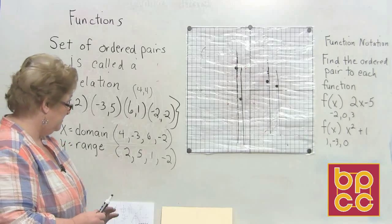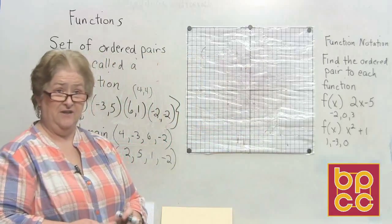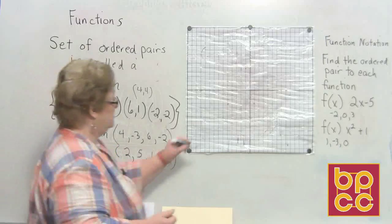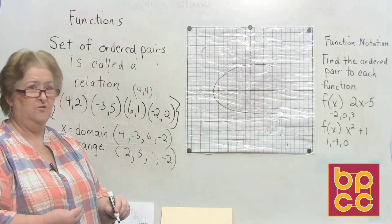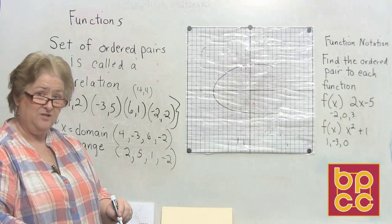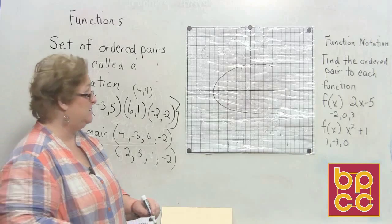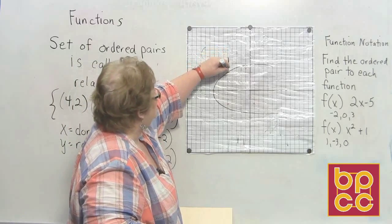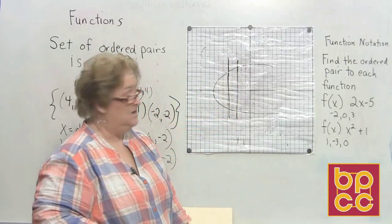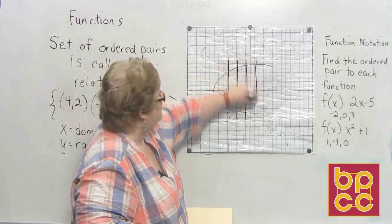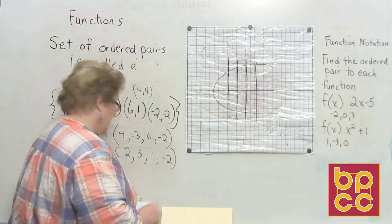Now I'm going to draw some pictures on my graph and I want us to determine if the picture represents a function or not. If you were to start drawing vertical lines and as I go down my vertical line I hit any part of this line more than once, then X has been used more than once and that would not be a function. I'll just start going down these vertical lines — it hits here as I go down and it hits here again. This is not a function. Every single time I'm hitting the top and the bottom, so X has been used more than once. Not a function.